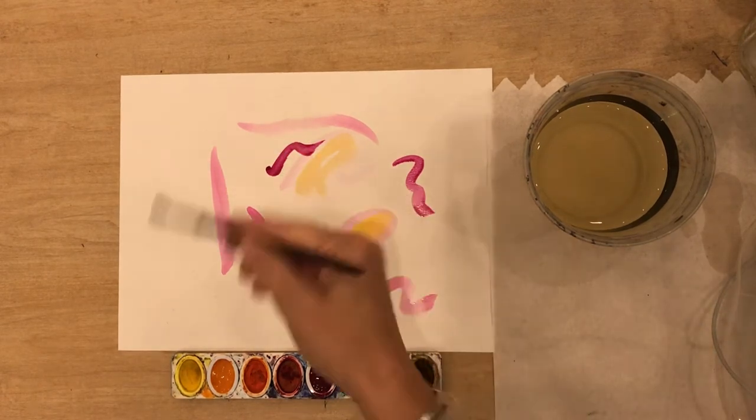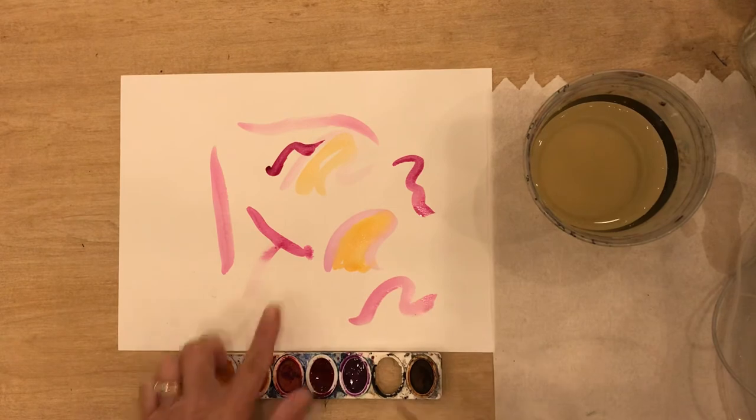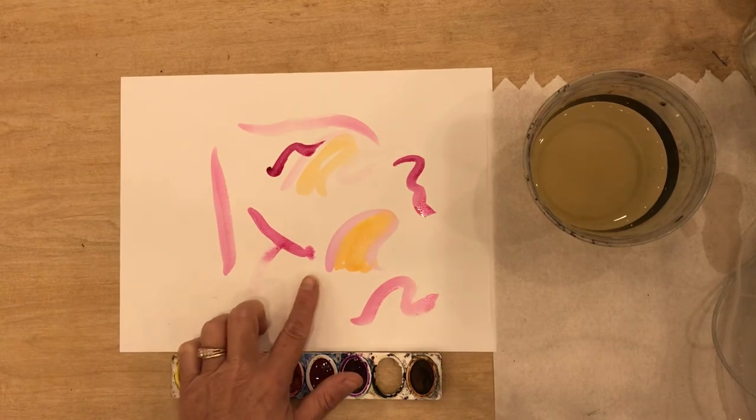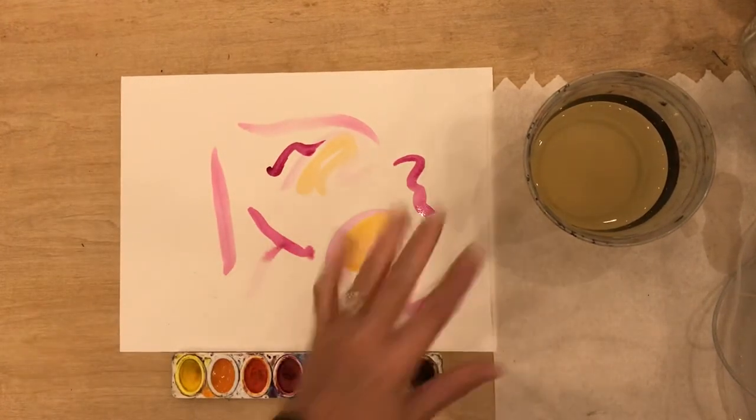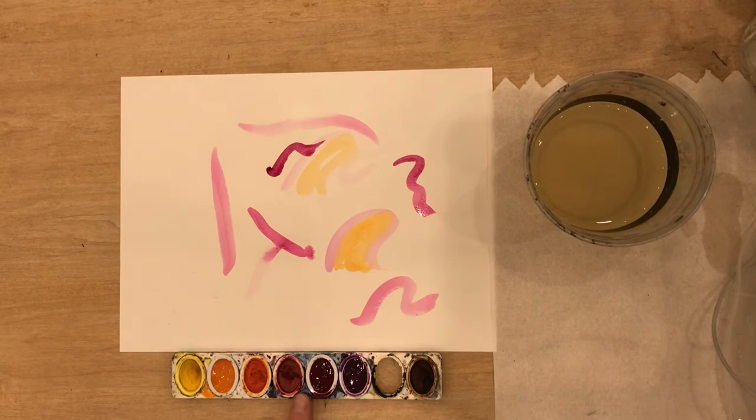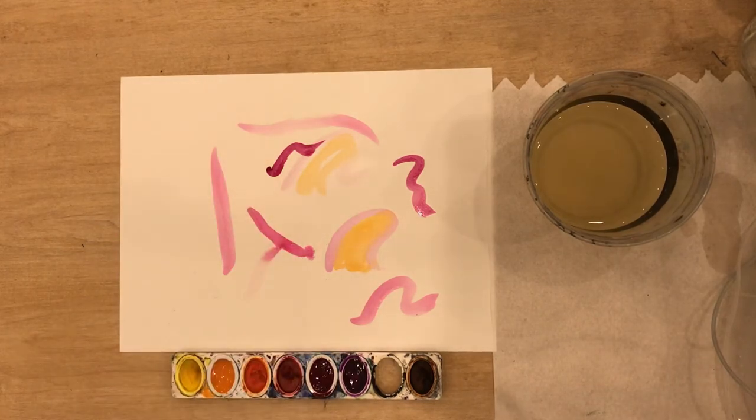Go ahead and paint your paper. And when you're done I don't want to see any of the white paper showing so we want to cover the whole thing. So go ahead and paint your warm colors on your paper.